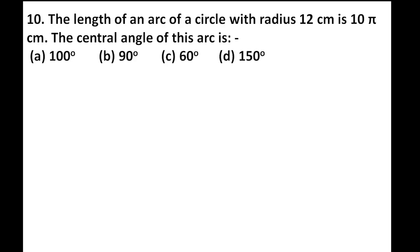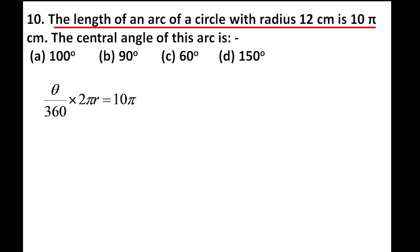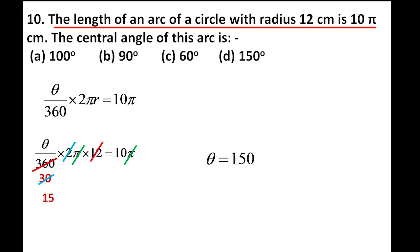The length of an arc of a circle with radius 12 cm is 10π. Find the central angle. Arc length formula: (θ/360) × 2πr = 10π. Substituting r = 12 and simplifying, we get θ = 150°. The fourth option is correct.